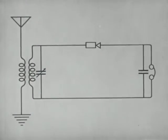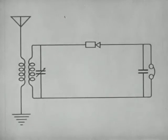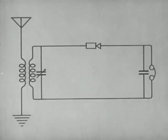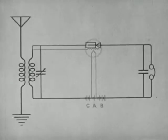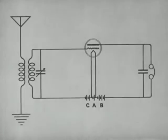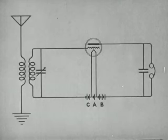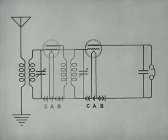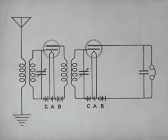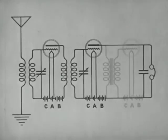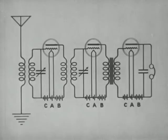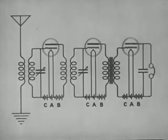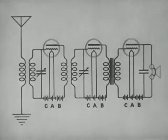Here is a diagram of a simple receiving set which uses a crystal as a detector. The vacuum tube is more efficient than a crystal because it also acts as an amplifier. If we wish a louder signal, we may add a radio frequency amplifier ahead of the detector. A still louder signal may be obtained by adding an audio amplifier after the detector. We can now use a loudspeaker instead of headphones.